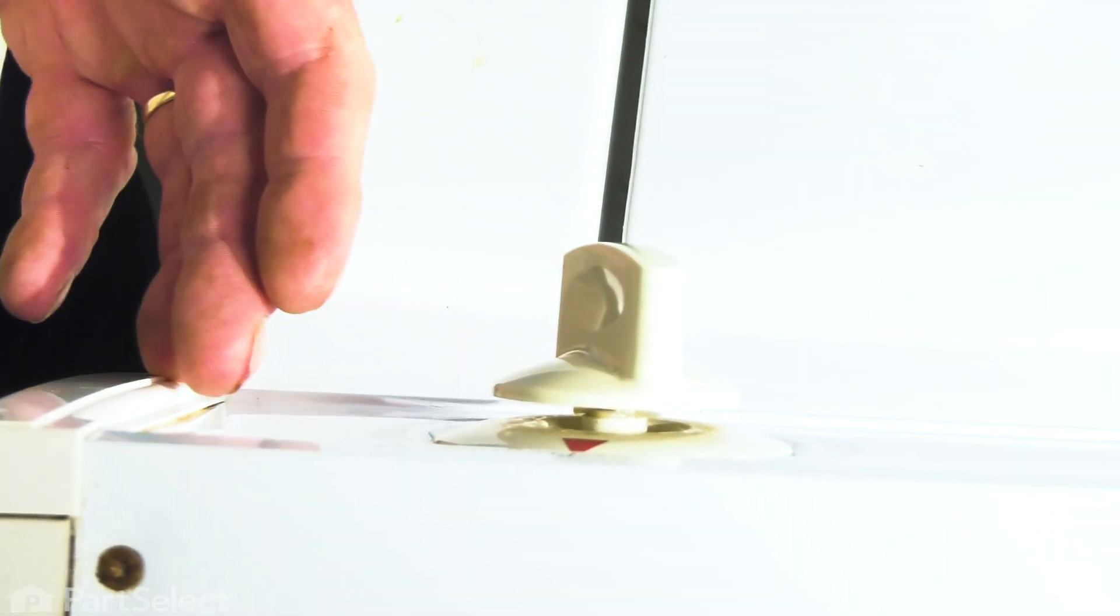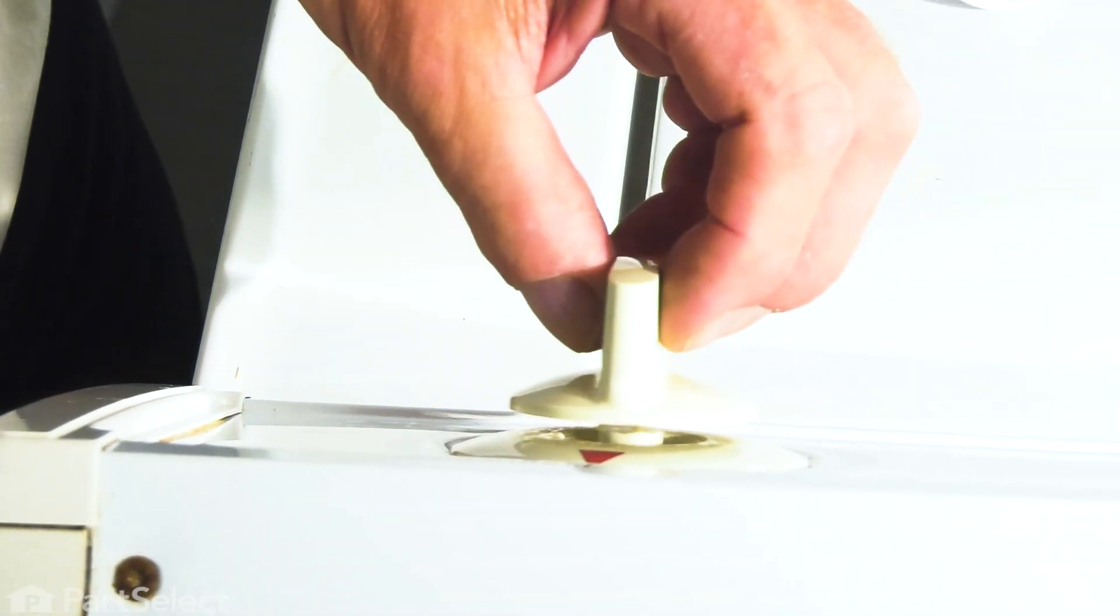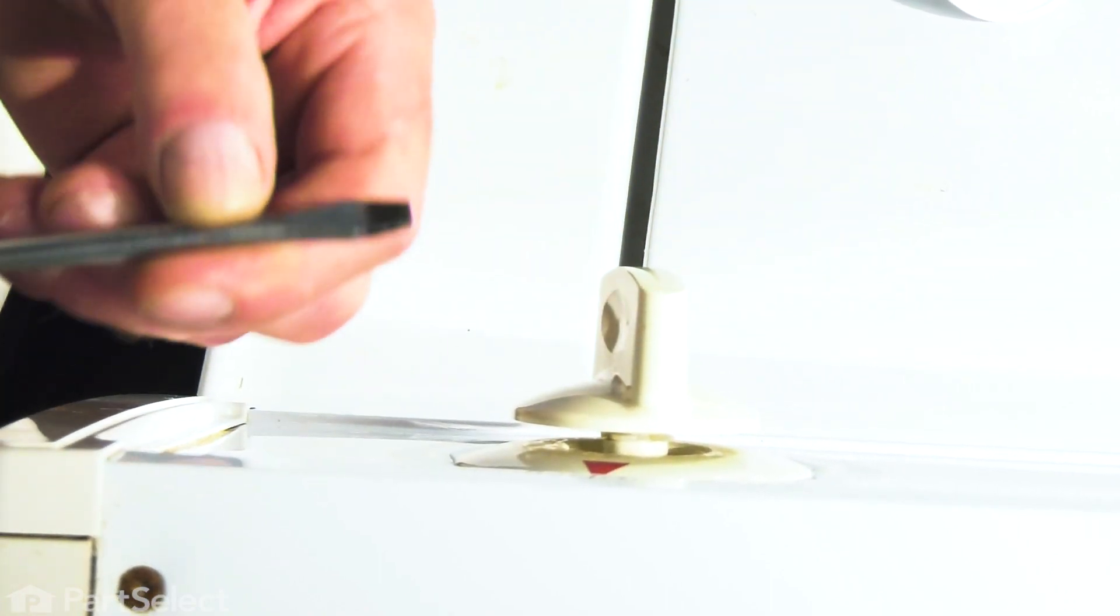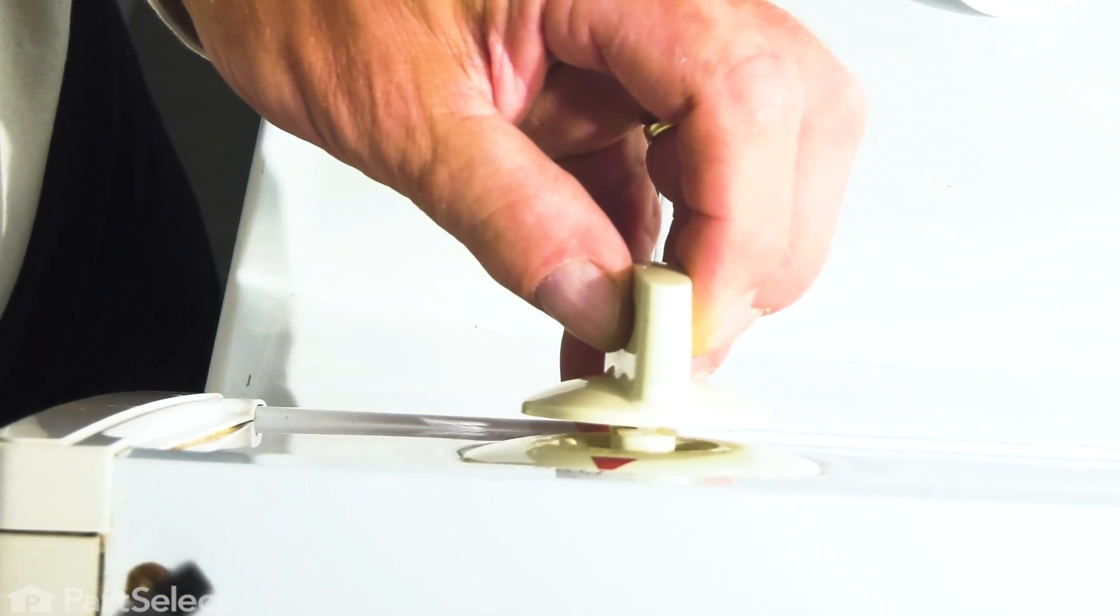To remove that clip on the timer knob, we'll just rotate it so that the fork end of it is pointing up or so that you have access to it.